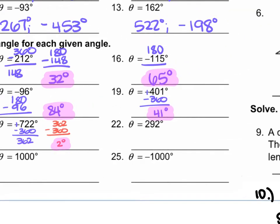For number 22, theta is 292. We take 292 and subtract 180, which gives us 212. That's not a positive acute angle — it's obtuse — so we do 360 minus 292, which gives us 68 degrees. That is the acute angle we're looking for.